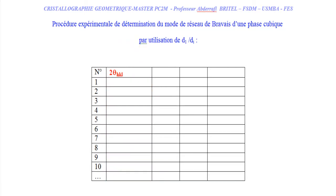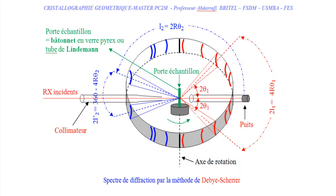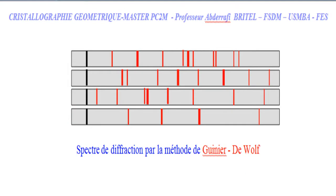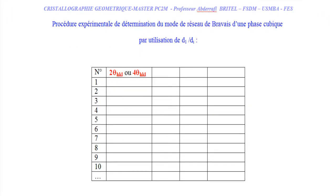According to the experimental techniques, the diffraction angles are obtained from 2θ or 4θ. The techniques allowing access to 4θ are those where the detector is a photographic film, as is the case for the Bacherer method or the Guignet-Dewolf method.